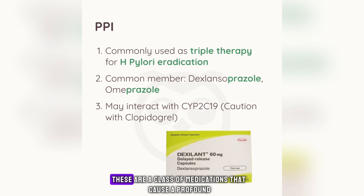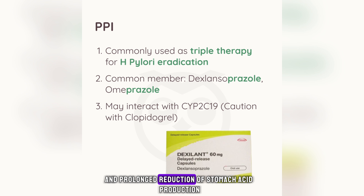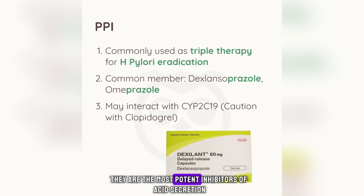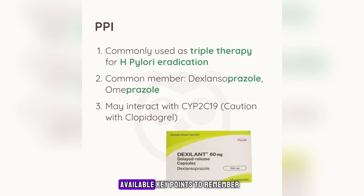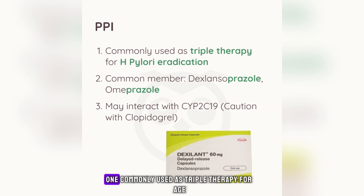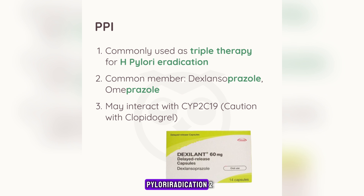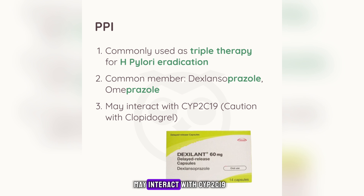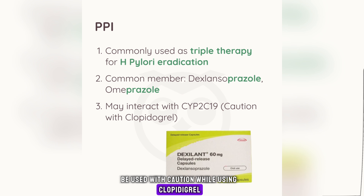Proton pump inhibitors are a class of medications that cause a profound and prolonged reduction of stomach acid production. They do so by irreversibly inhibiting the stomach's H-K-ATPase, the proton pump. They are the most potent inhibitors of acid secretion available. They are commonly used as triple therapy for H. pylori eradication. Common members include dexlansoprazole and omeprazole. They may interact with CYP2C19, so they should be used with caution while using clopidogrel.